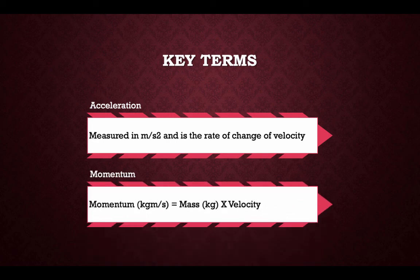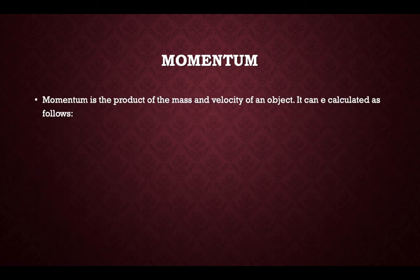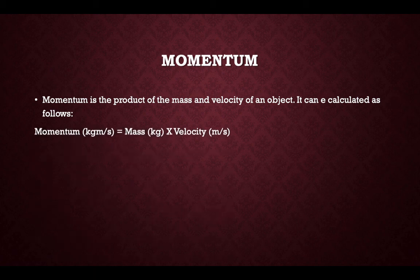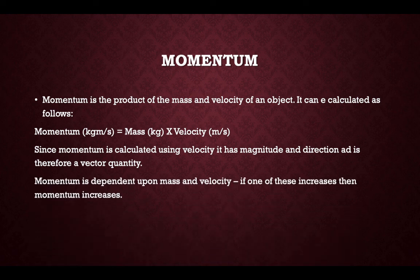Momentum is measured in kilograms metres per second and is mass times velocity. Momentum is the product of the mass and velocity of an object, calculated as: momentum equals mass times velocity. Since momentum is calculated using velocity, it has a magnitude and direction and is therefore a vector quantity. Momentum is dependent upon mass and velocity — if one of these increases, momentum increases.